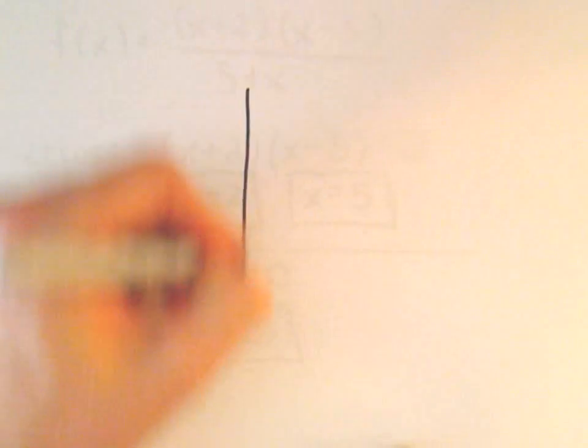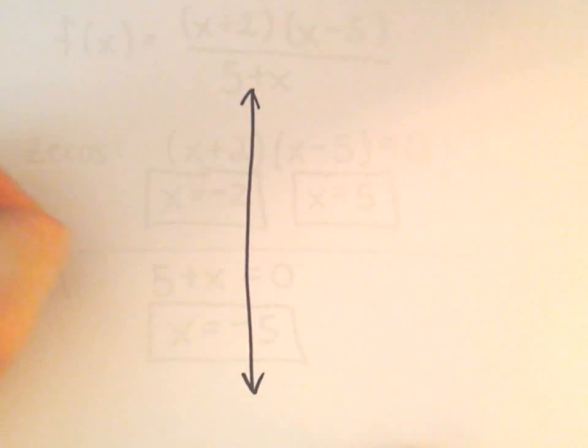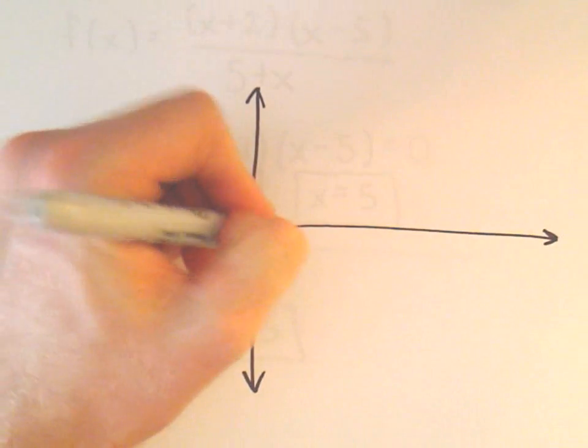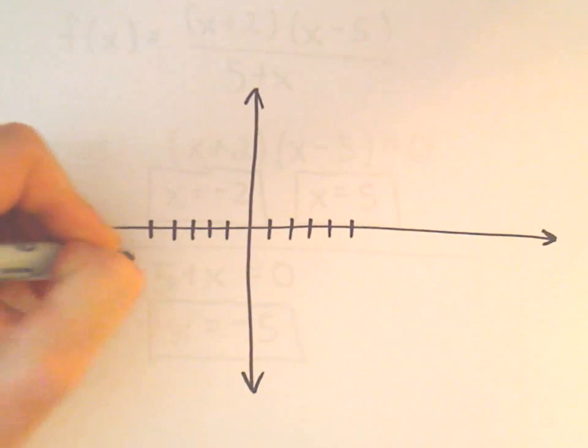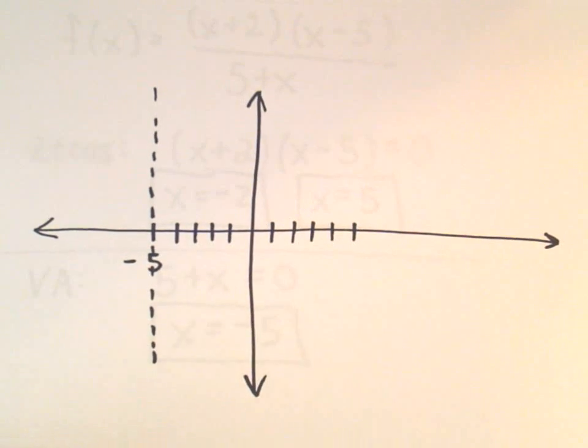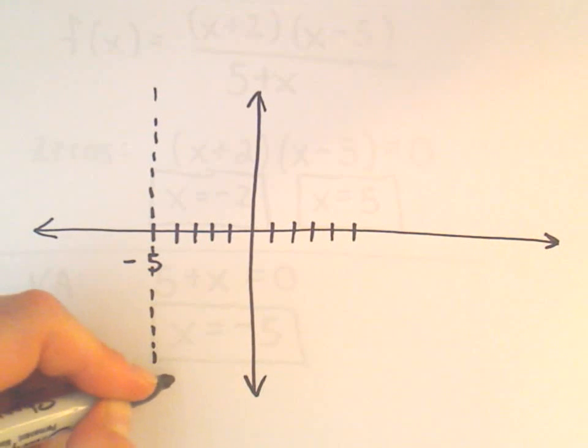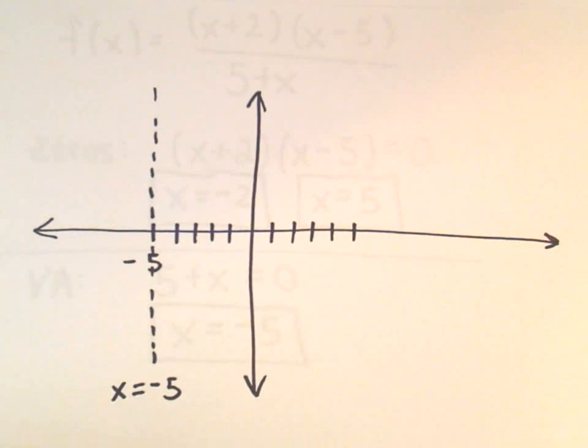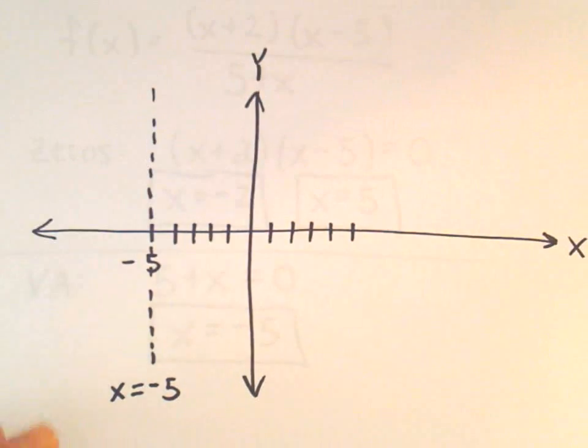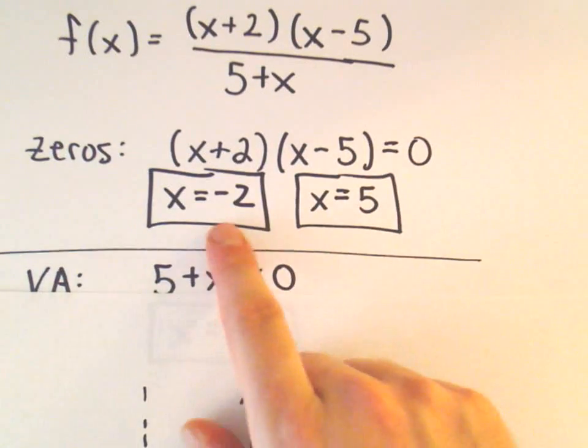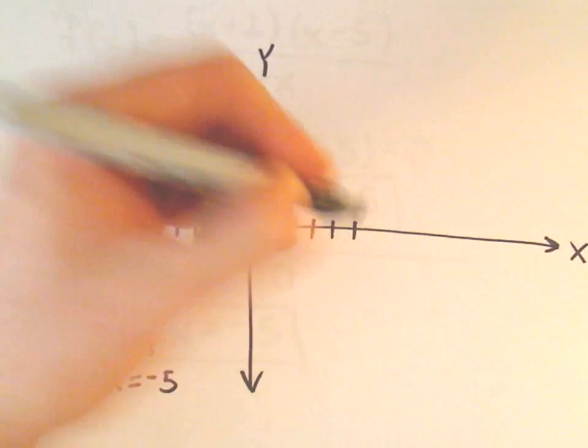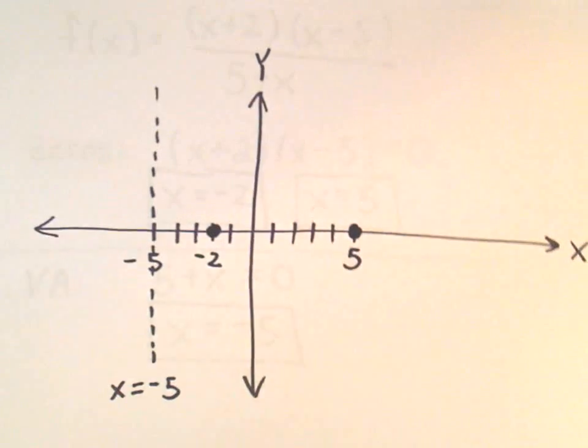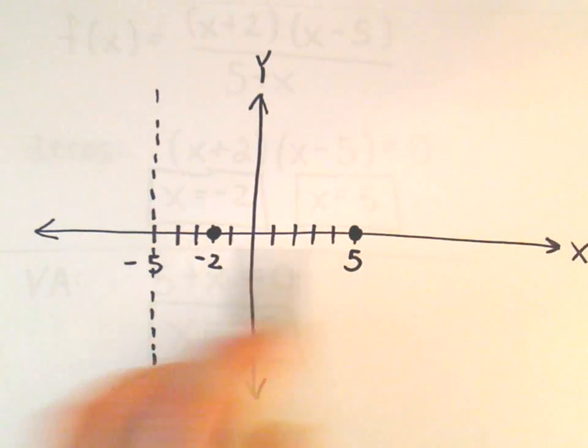All right, so again, just a very rough sketch here. So let's see, 1, 2, 3, 4, 5, negative 1, negative 2, negative 3, negative 4, negative 5. We said our vertical asymptote occurred here at negative 5, so we'll indicate that with a dashed line. I'm even going to write that this is x equals negative 5. So x-axis, y-axis. We said our x-intercepts occurred at negative 2 and positive 5. So there's x equals negative 2, and 5. And now we've got some important points.